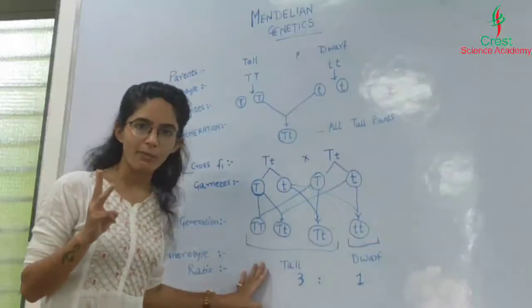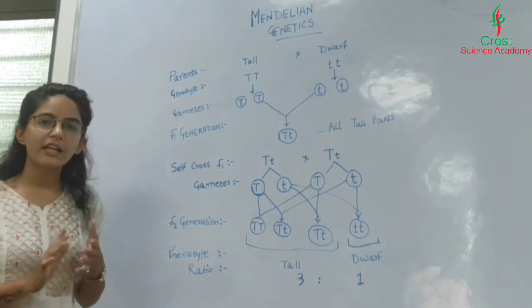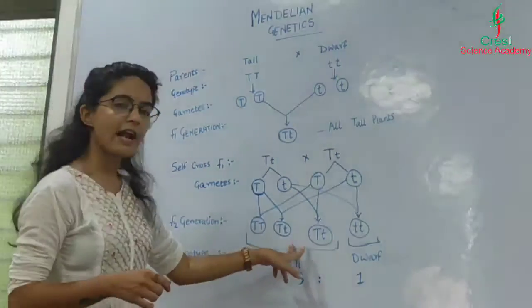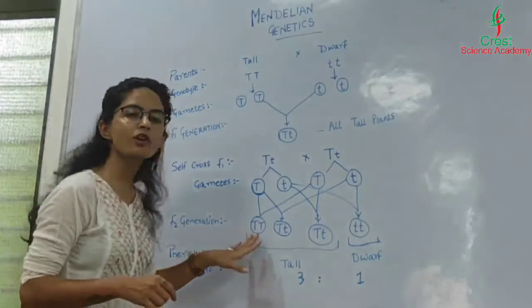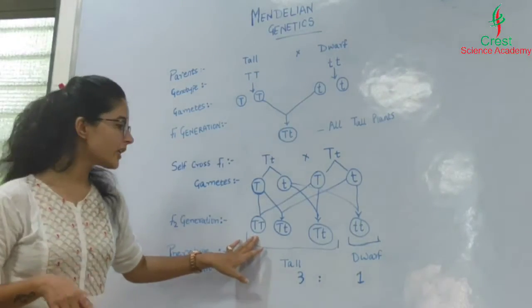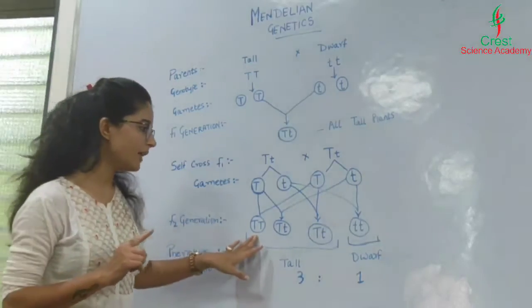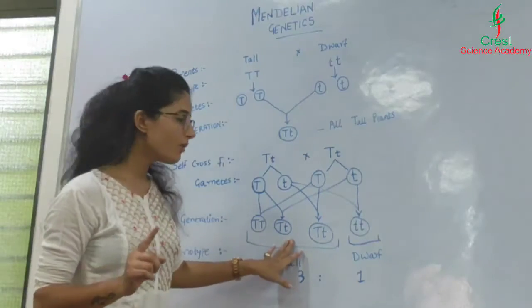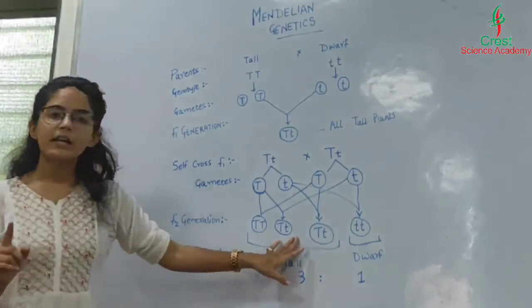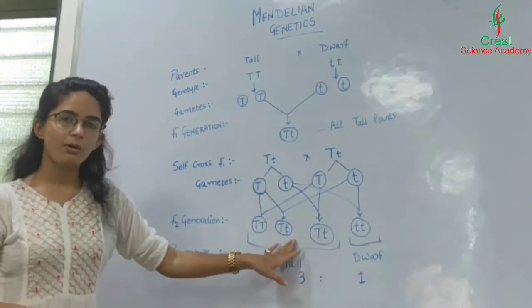All three tall plants were genetically different, which means two of the plants were heterozygous and one plant was homozygous for the tall character. Homozygous for tall means capital T capital T. Heterozygous for tall means capital T small t, but capital T remains expressed due to its dominant effect.